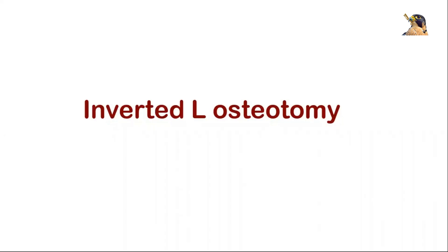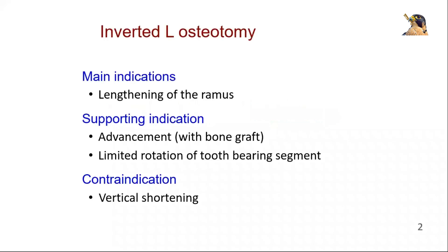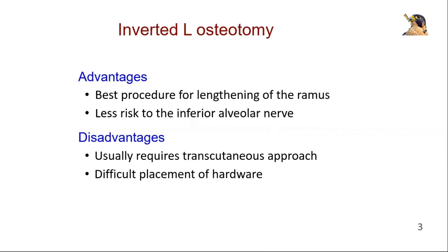In this video, we will explain inverted L-osteotomy. It is mainly used for lengthening of the ramus. It has less risk to the inferior alveolar nerve.